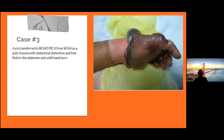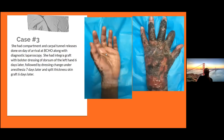Case number three. A four-year-old was transferred to BCHO PICU from San Francisco General Hospital with polytrauma — abnormal extension, free fluid in the abdomen, and a burn to the left hand. The older brother stuck her hand in hot water. She had compartment and carpal tunnel releases done on the day of arrival. We did prophylactic fasciotomies to her hand, debridement, then went back and placed Integra graft with a bolster dressing. Six days later — fourteen days total — a split-thickness skin graft was placed.